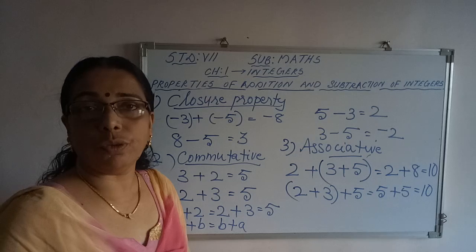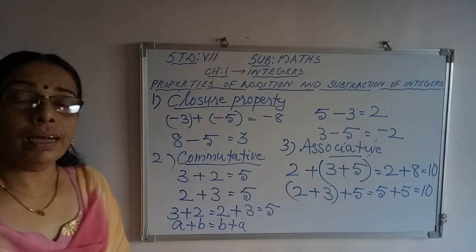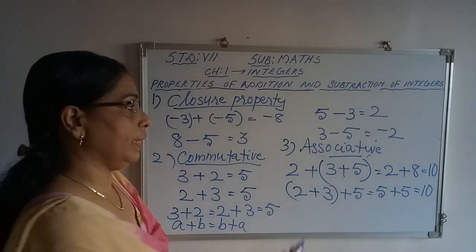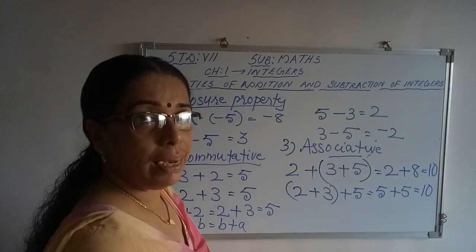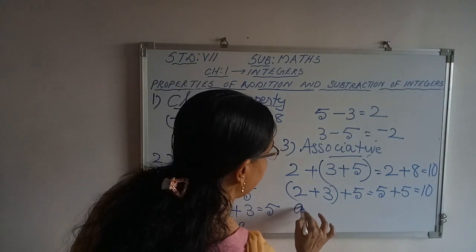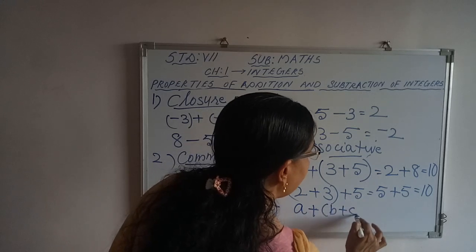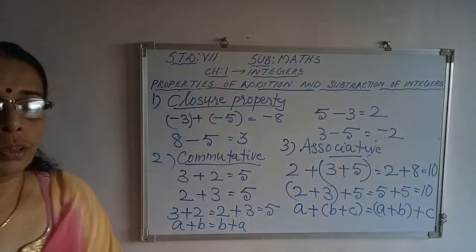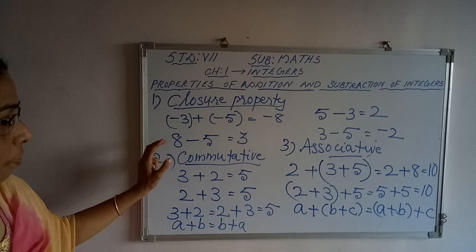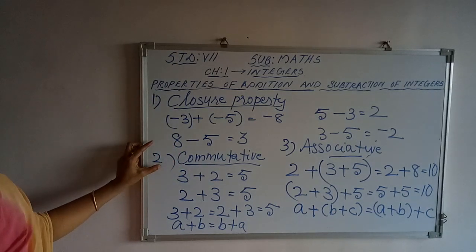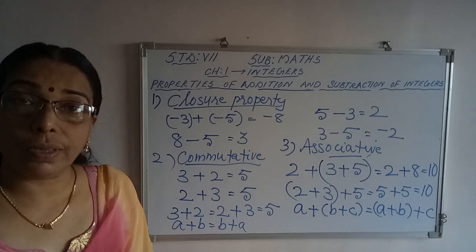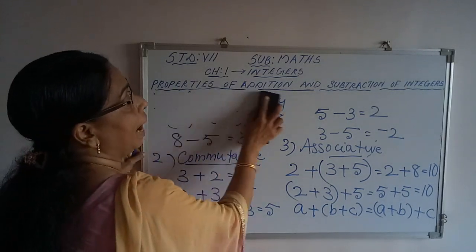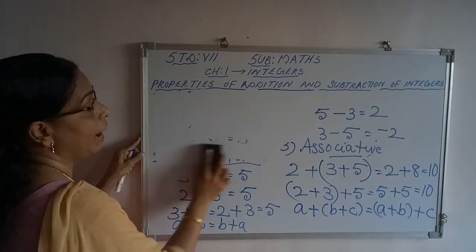This property is called associative property. Integers are associative under addition but not associative under subtraction. So those are three properties. Is that clear? First one: closure property. Second one: commutative property. And the third: associative property. Now one more property we can see — that is additive identity.